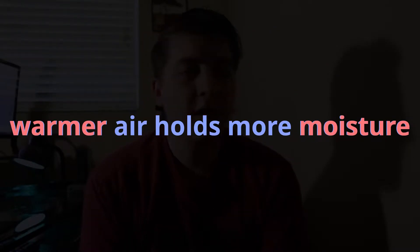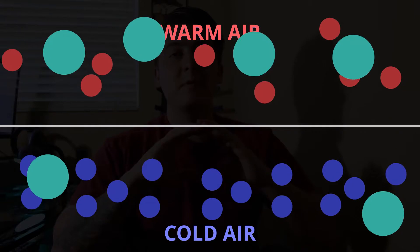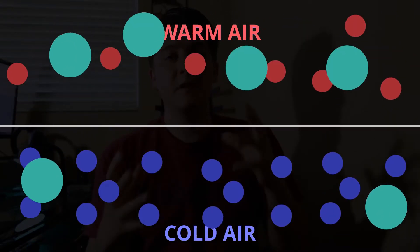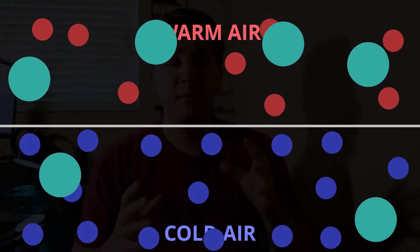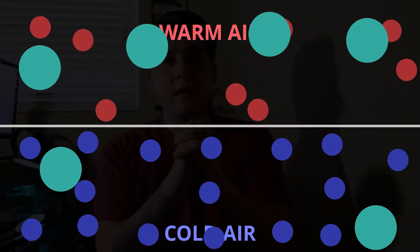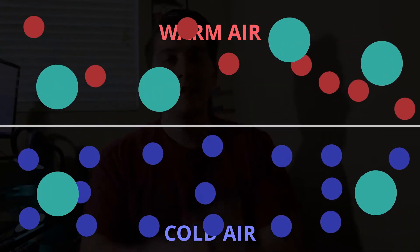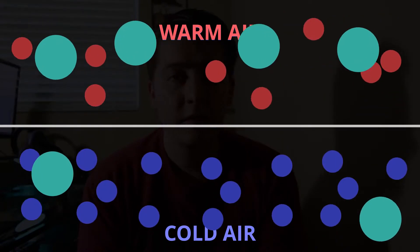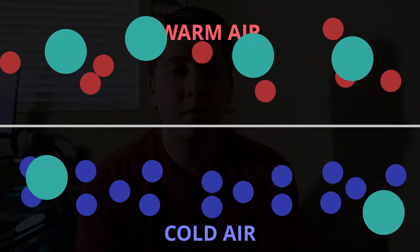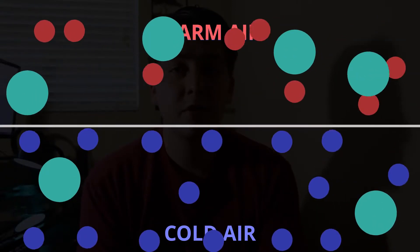Why can warmer air hold more moisture? Think in terms of the air molecules themselves — there's a huge gap between air molecules in warmer air, so more moisture can fit within that given area. If the room is colder, the molecules are closer together and there's not much moisture that can fit inside. So the warmer the room, the more room there is for moisture itself.